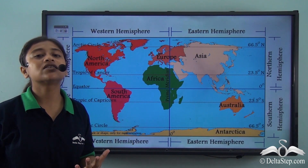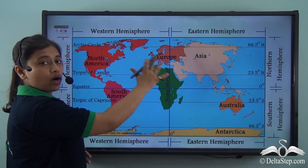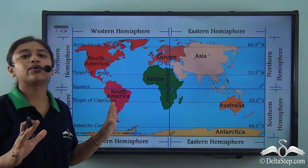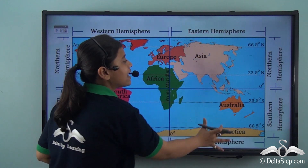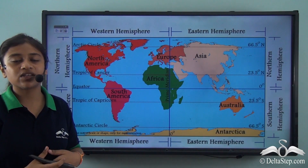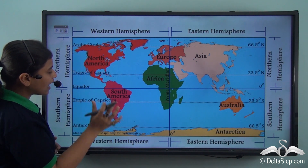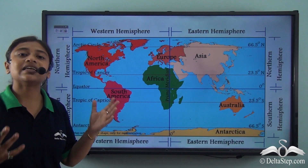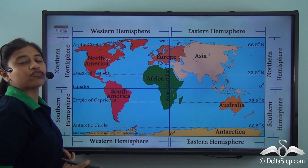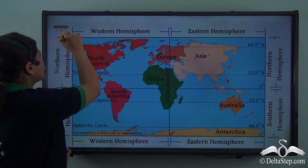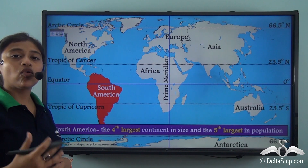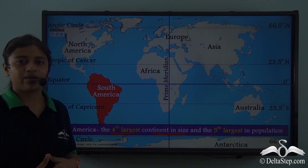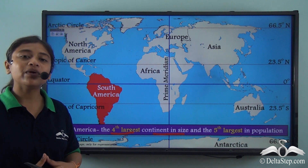Now let us see where the continent of South America is located. If we divide the world map into four equal parts with the help of the prime meridian, which divides the map into the Northern Hemisphere and Southern Hemisphere, we see that South America completely lies in the Western Hemisphere and almost entirely in the Southern Hemisphere, while a certain portion also lies in the Northern Hemisphere. The continent of South America is the fourth largest continent in size after Asia, Africa, and North America. However, it is the fifth largest continent if population is taken into consideration.